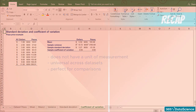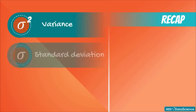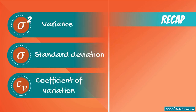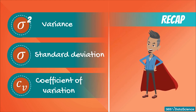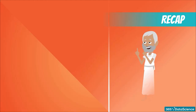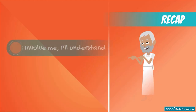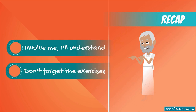Let's recap what we have learned. There are three main measures of variability: variance, standard deviation, and coefficient of variation. Each of them has different strengths and applications. You should feel confident using all of them as we are getting closer to more complex statistical topics. And remember Aristotle's advice — involve me, I'll understand. So please don't forget to get involved with the exercises.